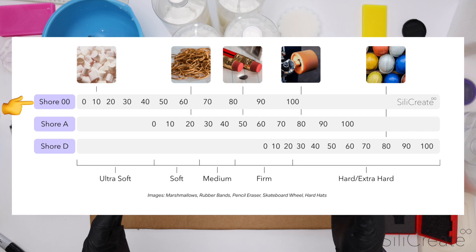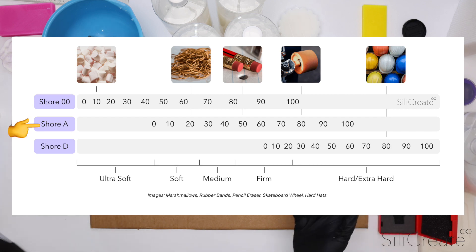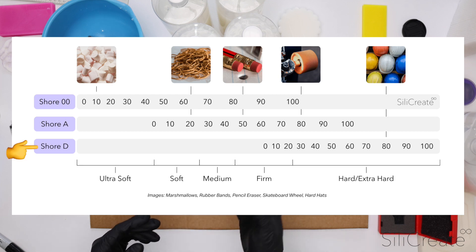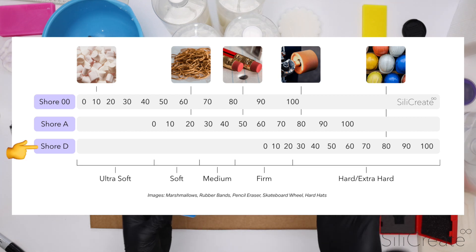Double zero is for very soft materials, the A is for general silicon rubbers, and the D scale is for harder plastics and stuff like that.